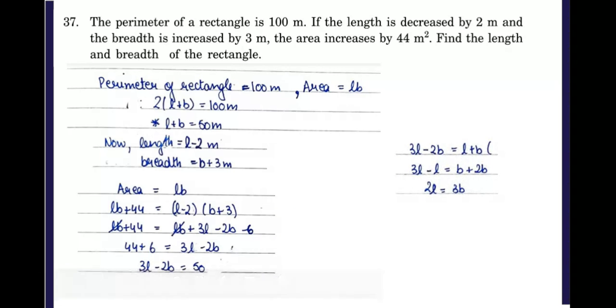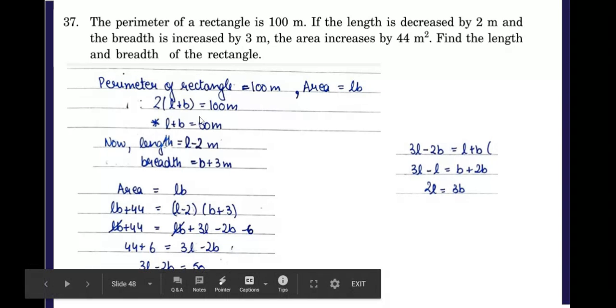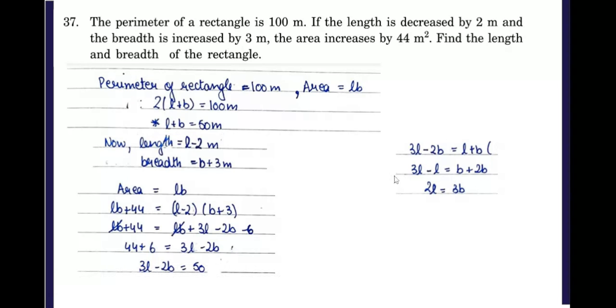Now you can put L plus B at the place of 50 because earlier we found that L plus B is 50. When we simplify this, we get a relationship between L and B, and we see that 2L is equal to 3B.